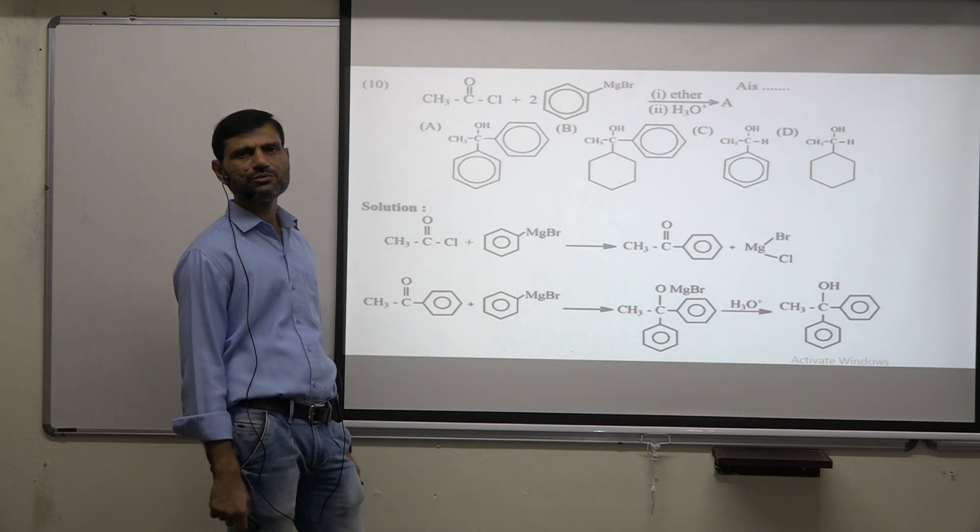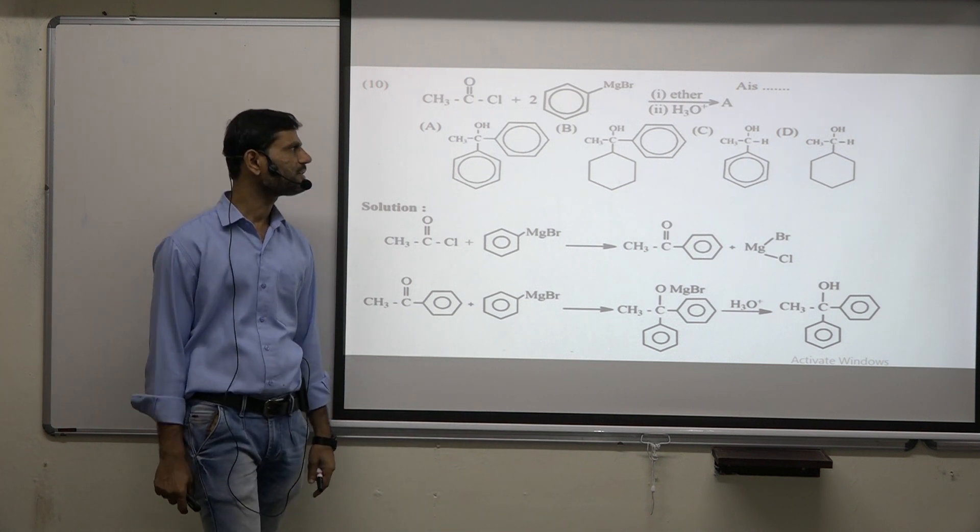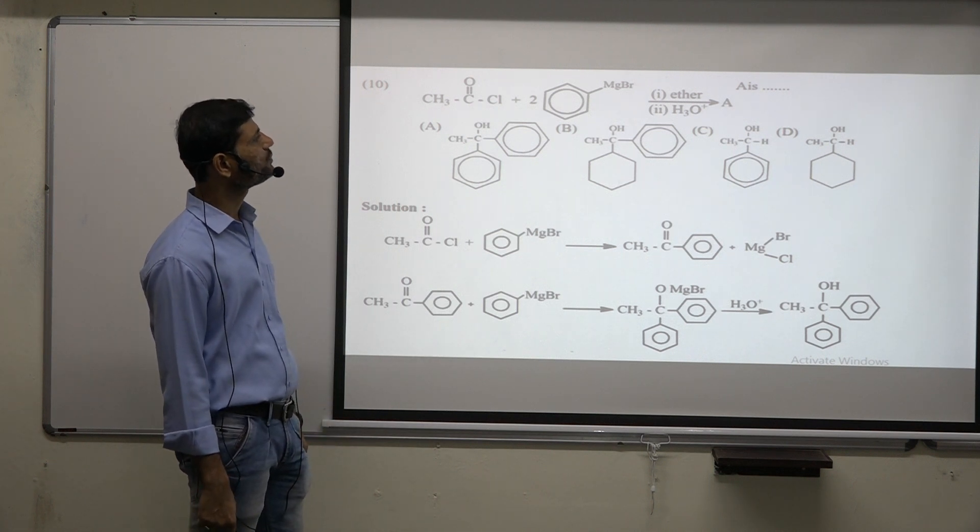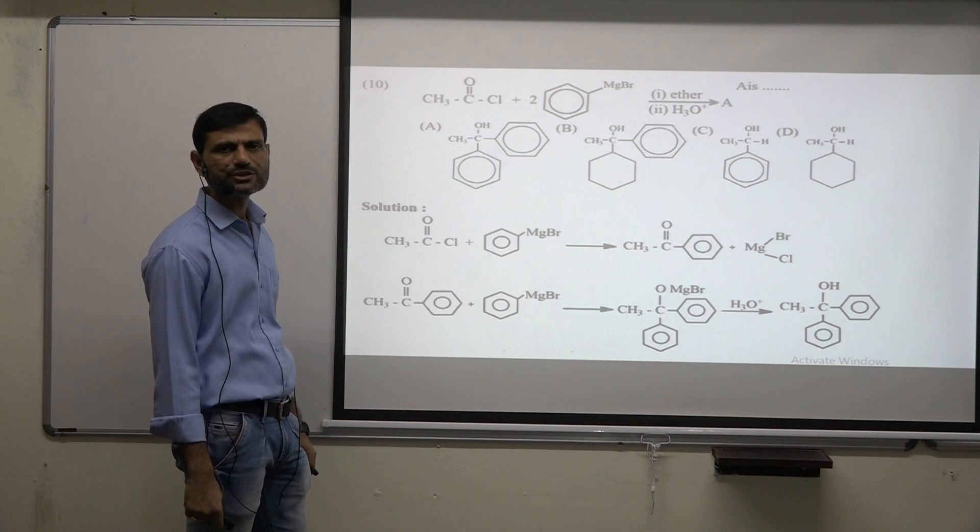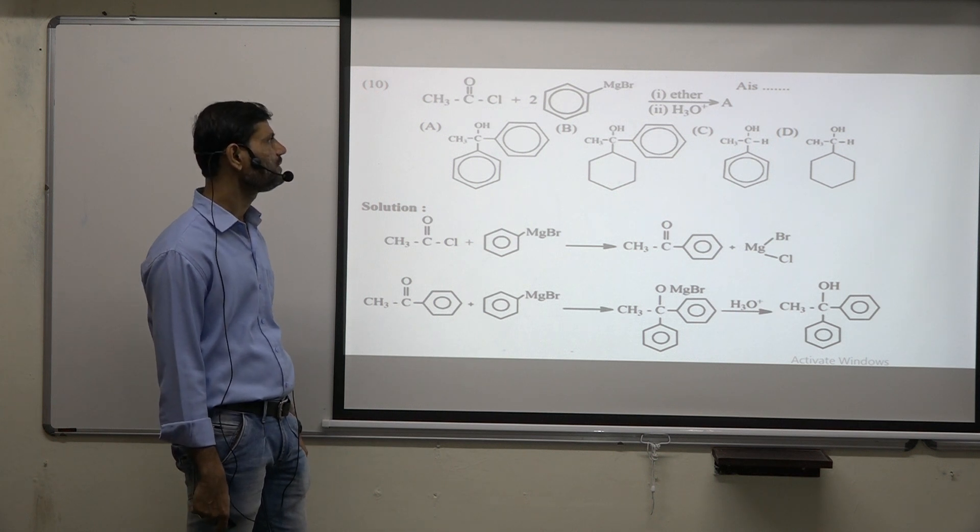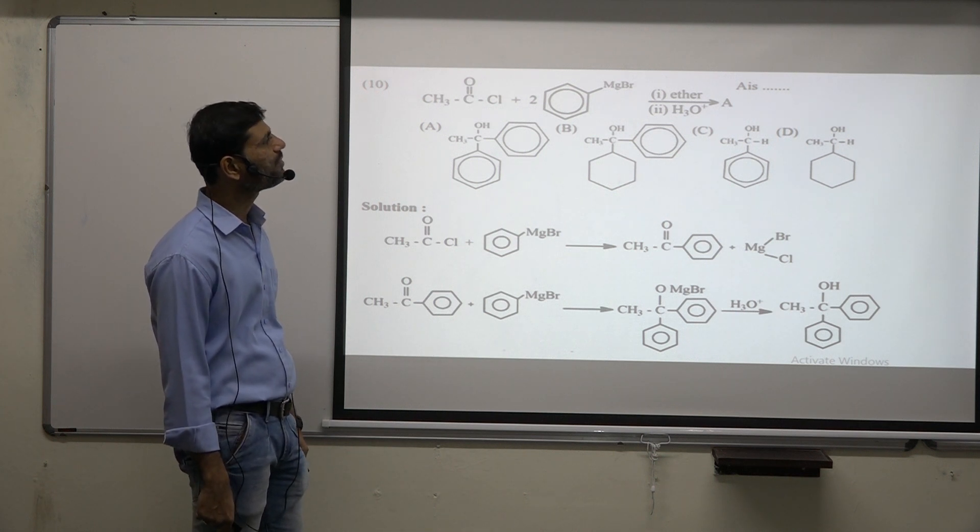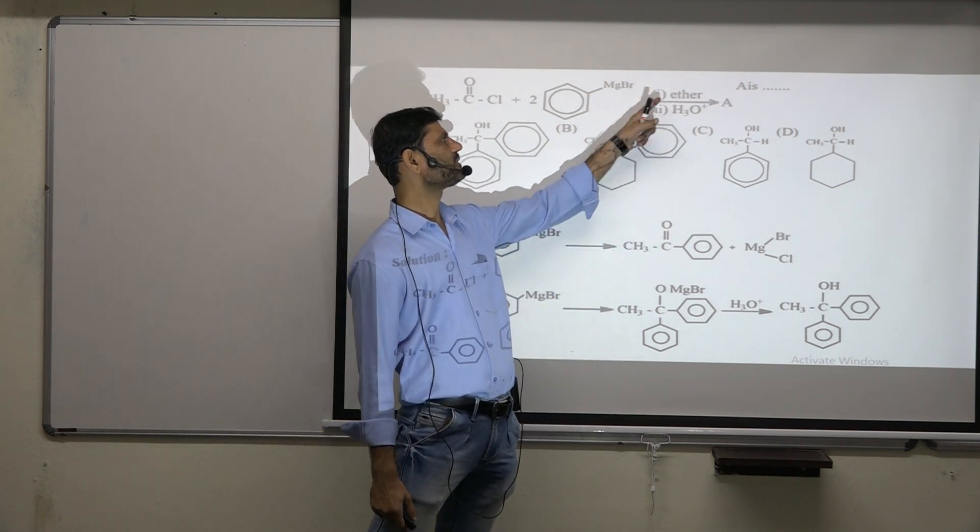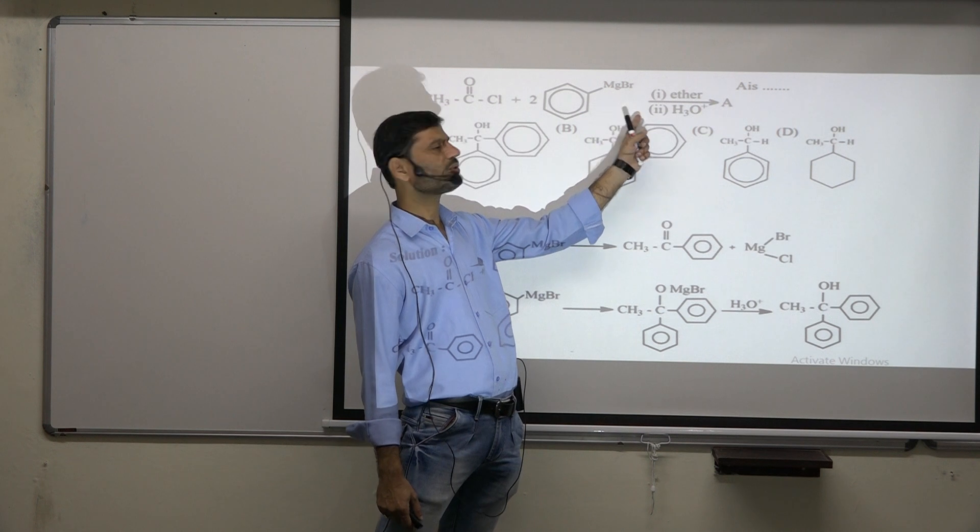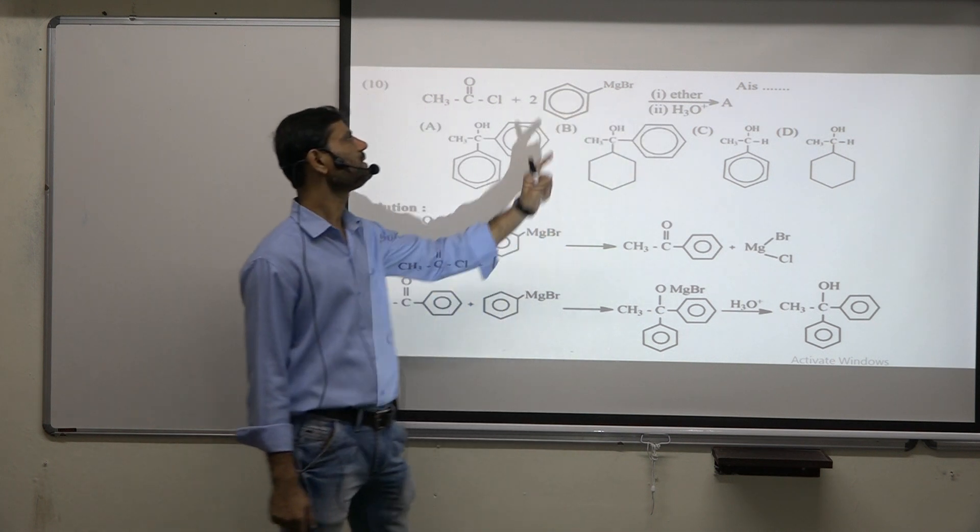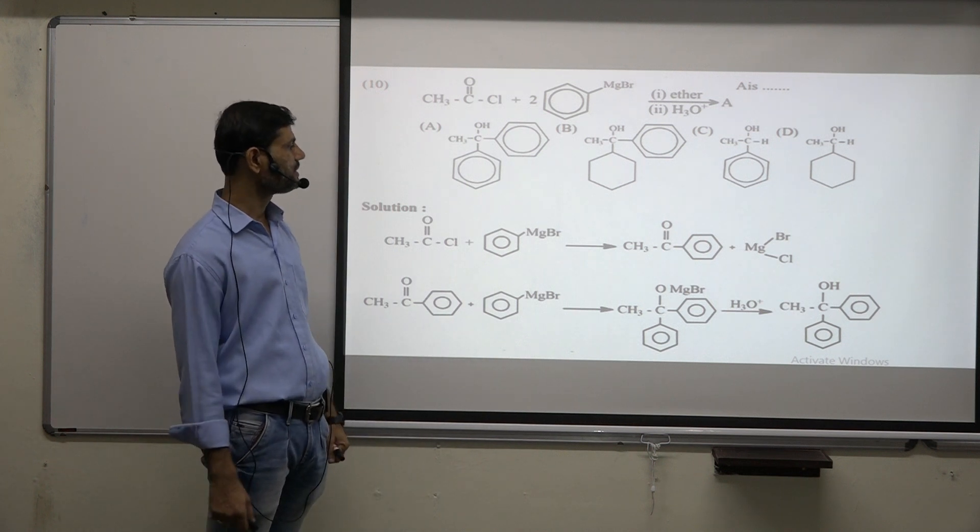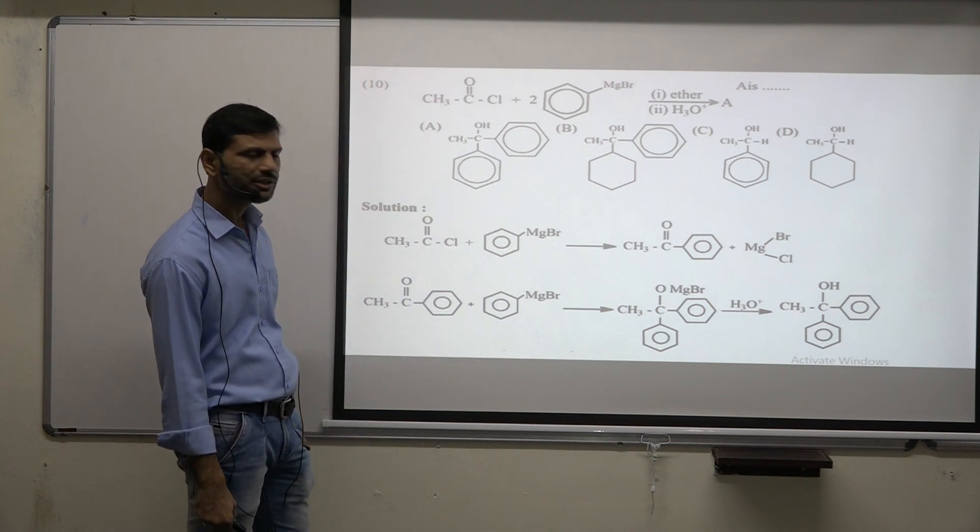Next question: Grignard reaction. Grignard reaction is important. CH3COCl with 2 mol of phenylmagnesium bromide reaction. Phenylmagnesium bromide is present because it has been used in a solvent. Next, it is hydrolysis, so product A is made.